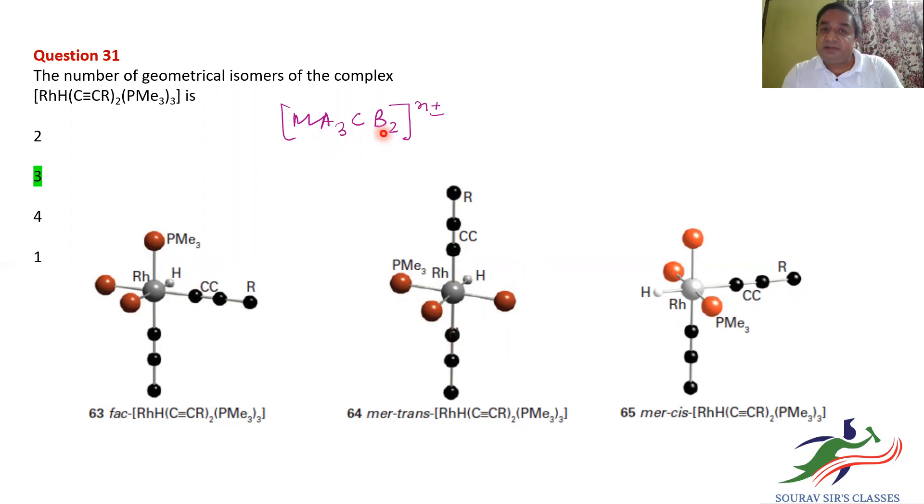Now to generate the other, had this been A₃B₃, then only two, FAC and MER. But for this case, when it is A₃CB₂, two B can be cis to each other. So B can be cis or B can be trans. So here the B are trans. So B can be cis. So this B and that B are cis. So what will happen? There will be a trans-mer and there will be a cis-mer. So all total, there will be three isomers for this particular compound.